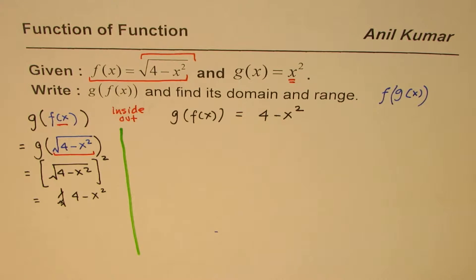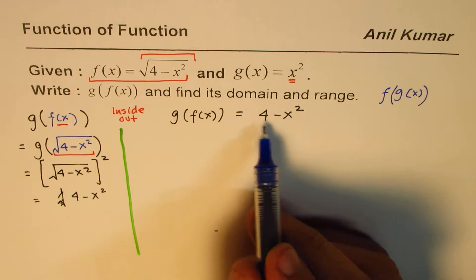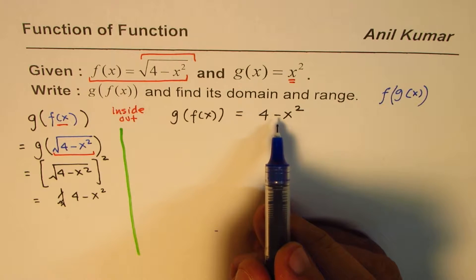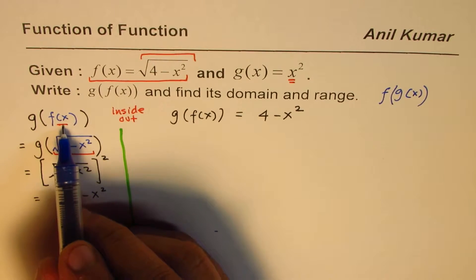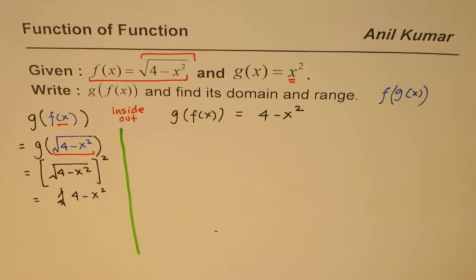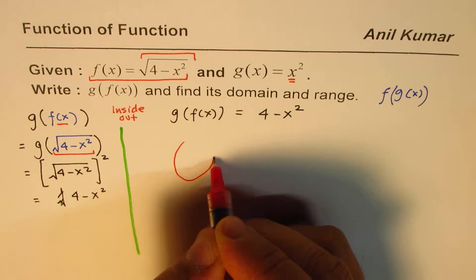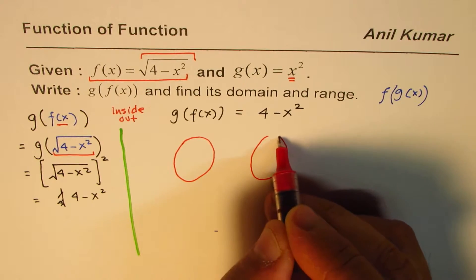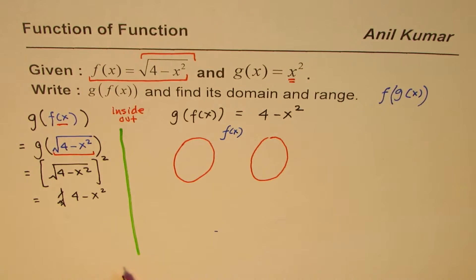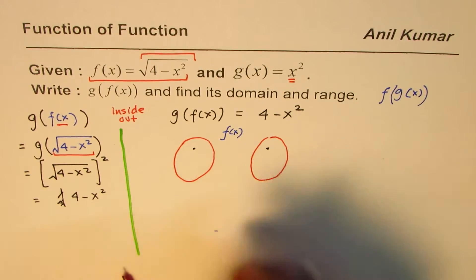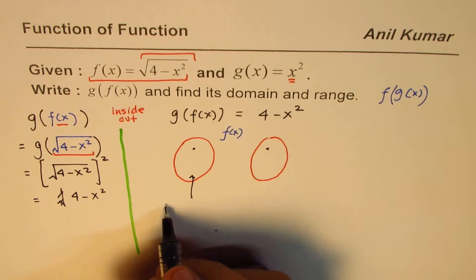Now if I have to write domain and range of this function, how do we write it? If you only see the end product, this product has no restriction on domain. However, the inside function f of x has restriction on domain. So we first calculated f of x. For every value here, we had an output. So the domain basically gets restricted with the restrictions on f of x.